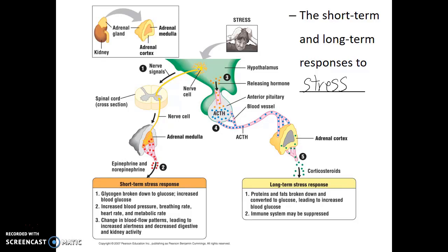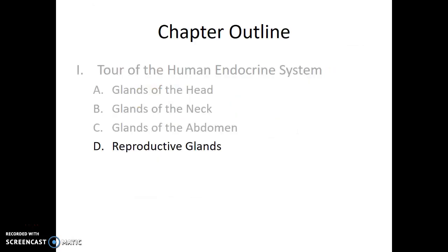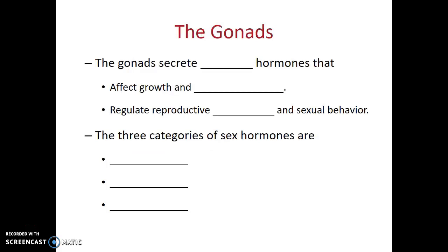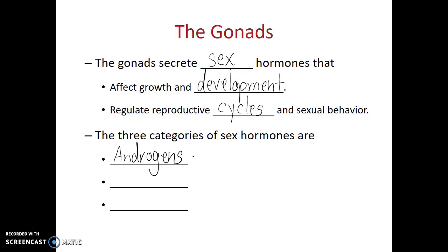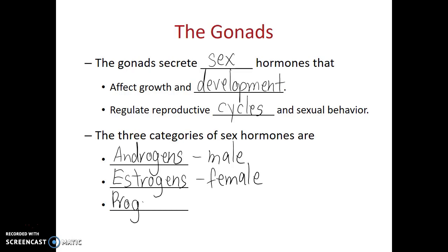The final endocrine glands we'll discuss in our tour are the gonads — the reproductive glands that produce our sex hormones. These sex hormones affect growth and development and regulate reproductive cycles and sexual behavior. The three categories of sex hormones are: androgens, which are the male sex hormones, the most common being testosterone; estrogens, which are the female sex hormones; and progestins, which are the pregnancy hormones.